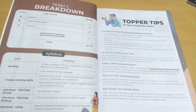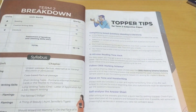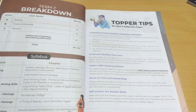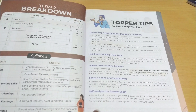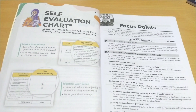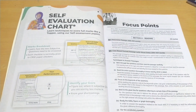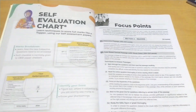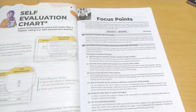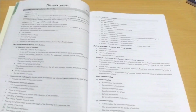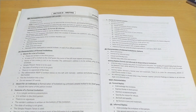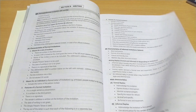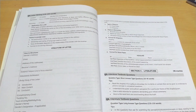They give topper tips for Term 2 subjective papers — how many words to write for how many marks. After that they give notes about the self-evaluation chart. Then they start with focus points, which are the key points to get high marks in the Term 2 board exam, given section-wise.